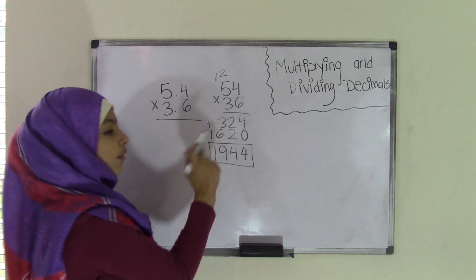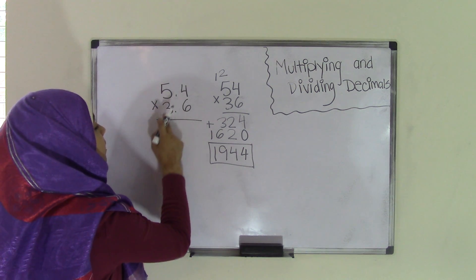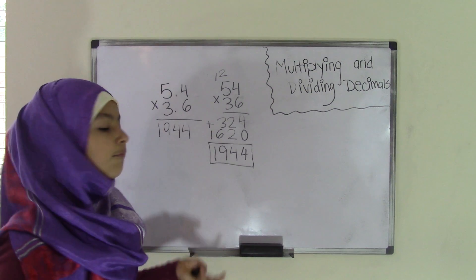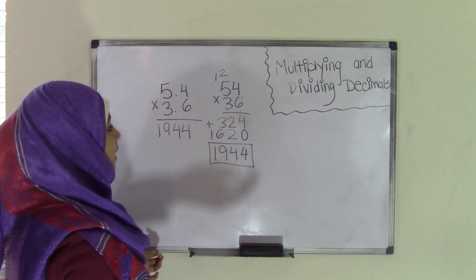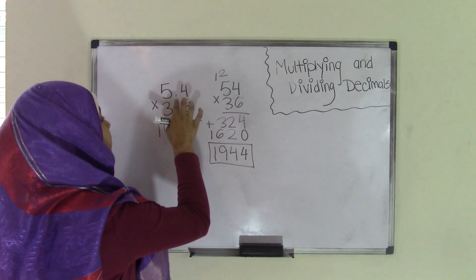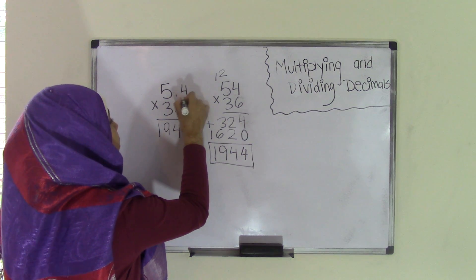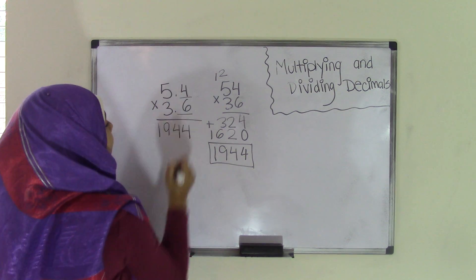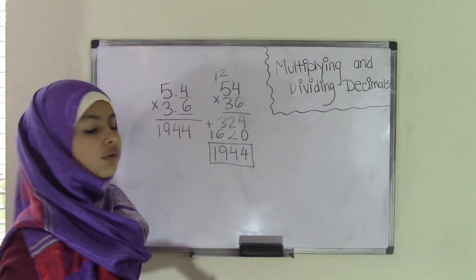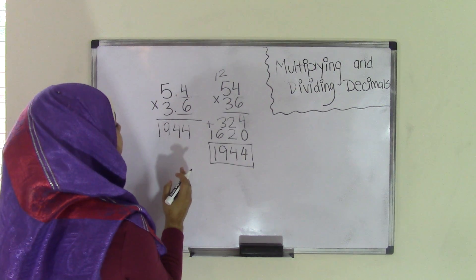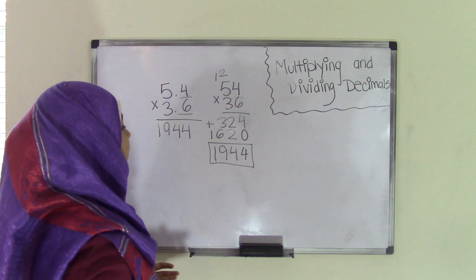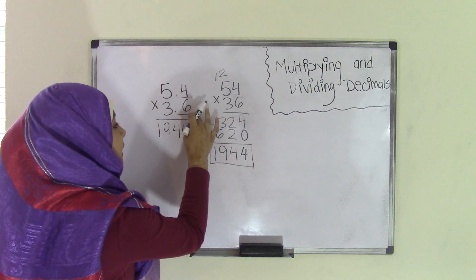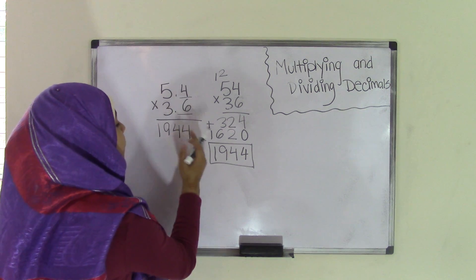Now, bring this product back to the original problem, which was 5.4 times 3.6, and write 1944. What you have to do to find your final product is count the number of digits after the decimal points in each number. For 5.4, there is only one digit after the decimal point. For 3.6, there is also one digit after the decimal point. So 1 plus 1 equals 2 digits in total. You're going to take the decimal point — 1944 is a whole number, and the decimal point is at the end — and move it two places from right to left.